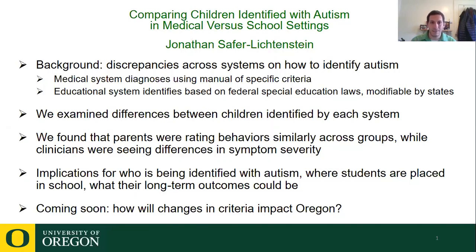The medical system diagnoses kids with autism using a manual of disorders with specific criteria a child must meet, whereas the educational system is based on federal special education laws and identifies kids as needing special education under one of several eligibility categories, of which autism is one. Under this broader federal definition, states are actually able to modify and change their criteria for how they identify or define autism.